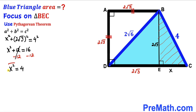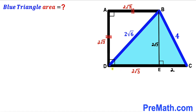Taking the square root, x = 2 units. Now let's look at the total length CD, which is the sum of DE and EC: 2√3 + 2. So the length CD equals 2 + 2√3 units.